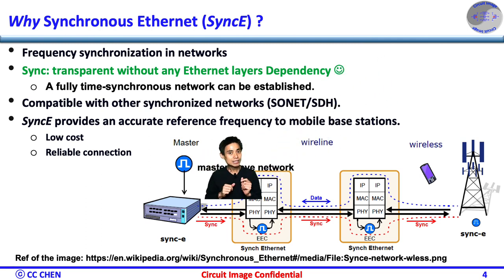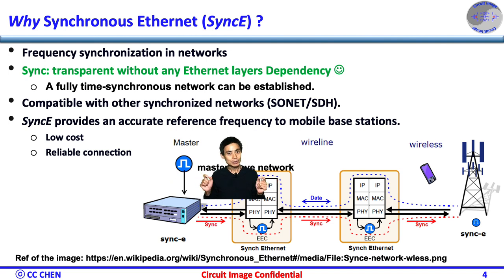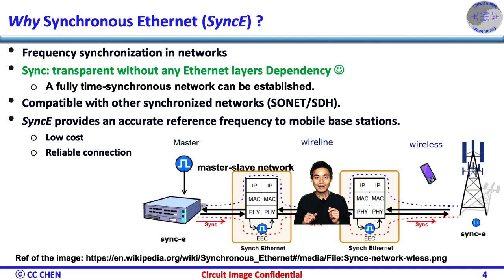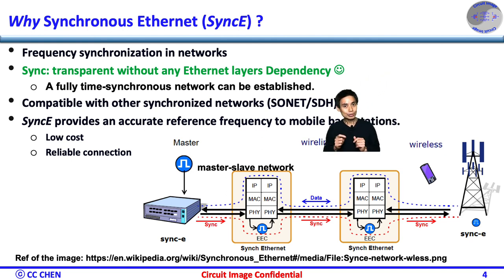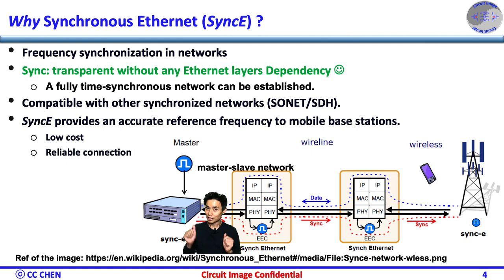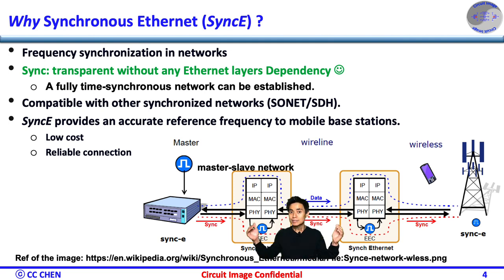On the other hand, Synchronous Ethernet can derive the physical layer transmitting clock from a high-quality frequency reference by replacing the crystal with a frequency source traceable to a primary reference clock. This will not affect or depend on the operation of any Ethernet layers, and will be transparent. The receiver at the far end of the link would lock to the physical layer clock of the received signal, and then acquire not only a highly accurate but also a stable frequency reference, similar to the traditional hierarchical master-slave network synchronization. The receiver could lock the transmission clock of its other port to the frequency reference, and we can fully establish a time-synchronous network.